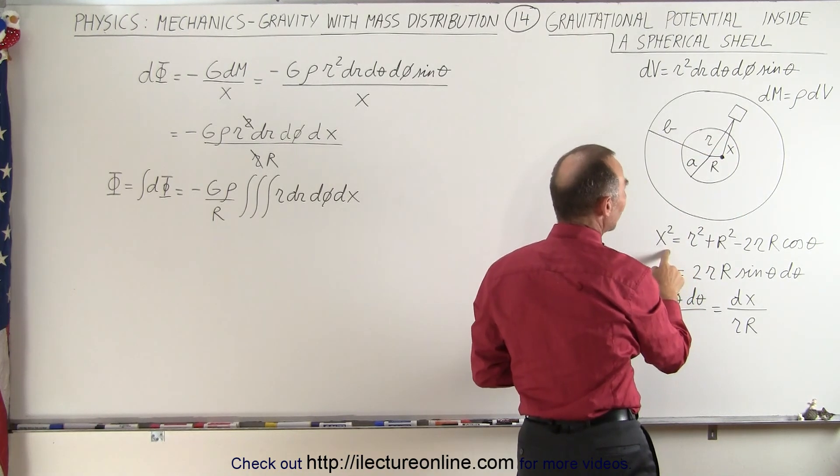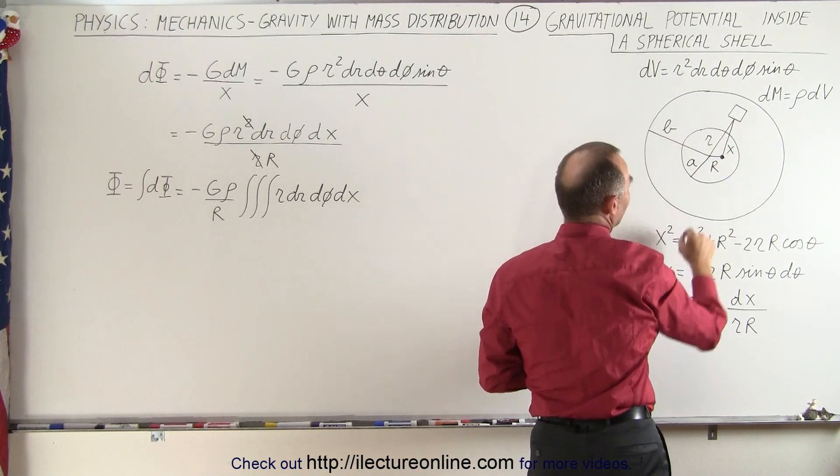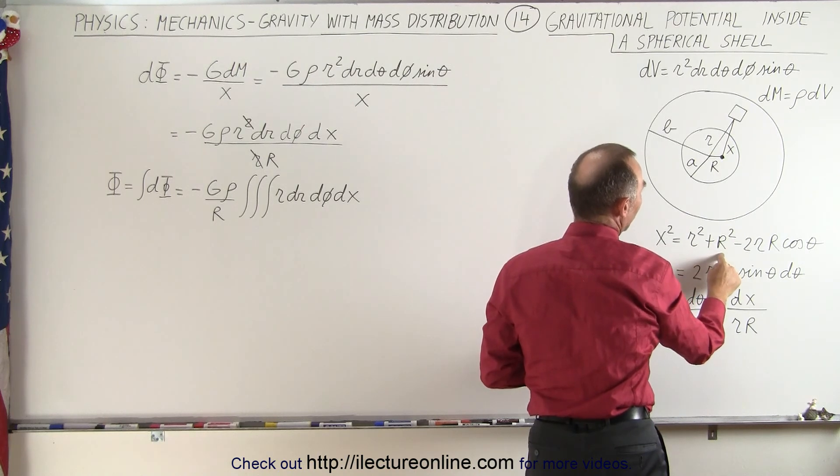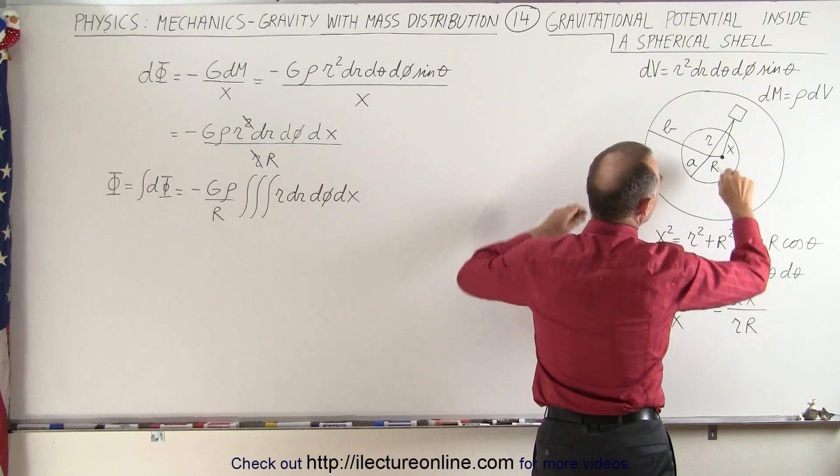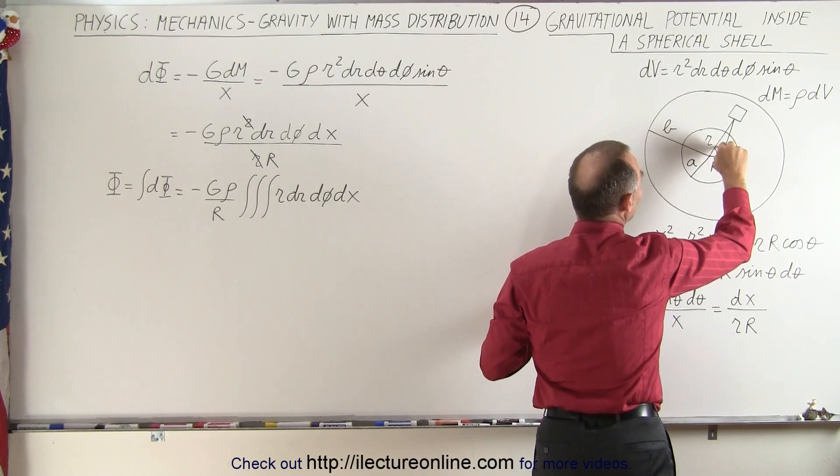Using the law of cosine we can say that x squared is equal to r squared plus capital R squared minus 2r big R cosine of theta, and this here is the angle theta inside.